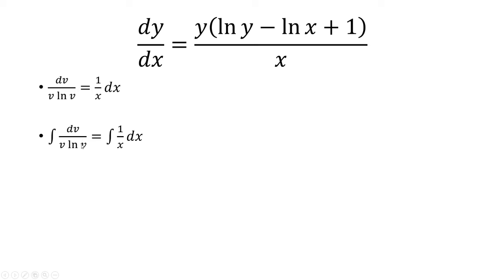So then it's just basically du over u. And then integrated, you get ln of u, where u is ln of v. So you have ln of ln of v on the left side is equal to ln of x plus c.